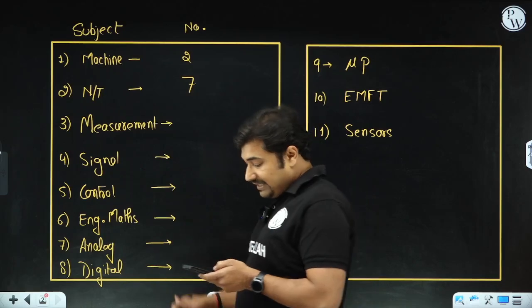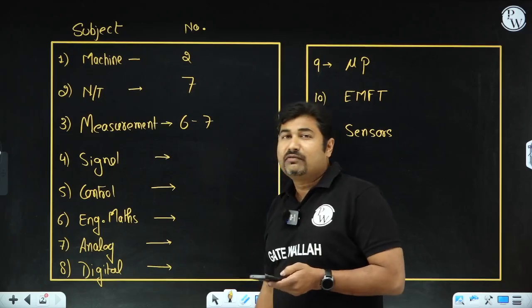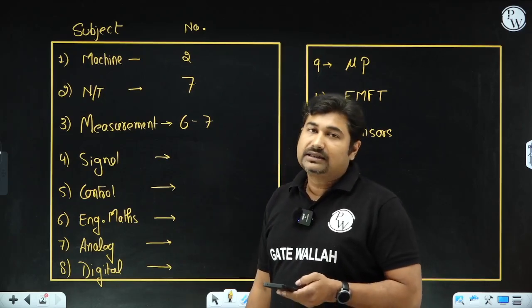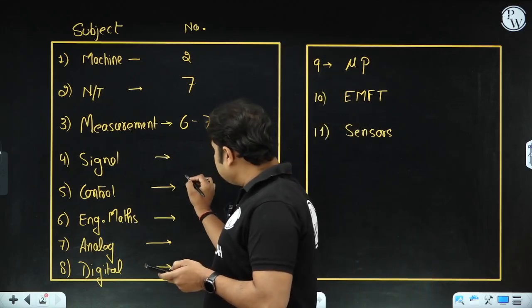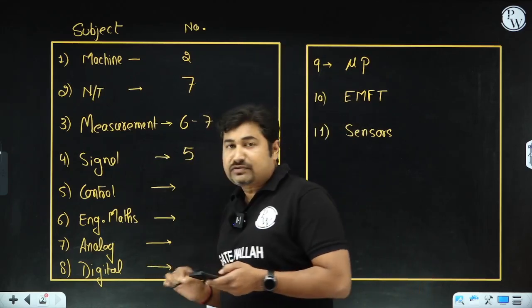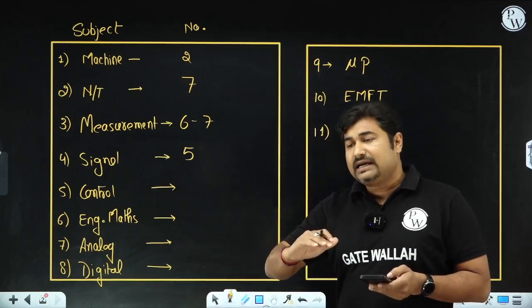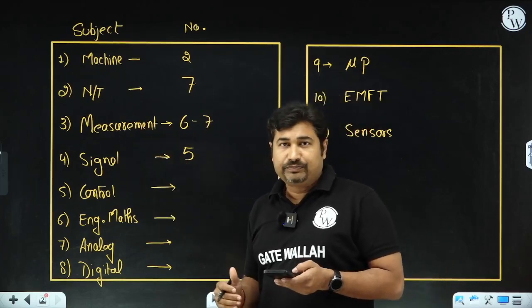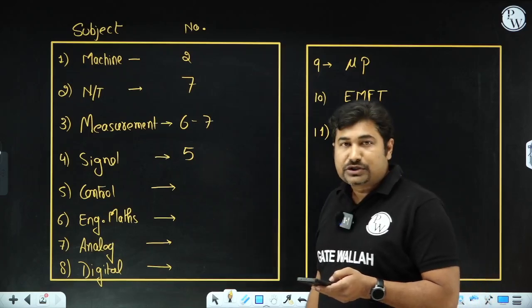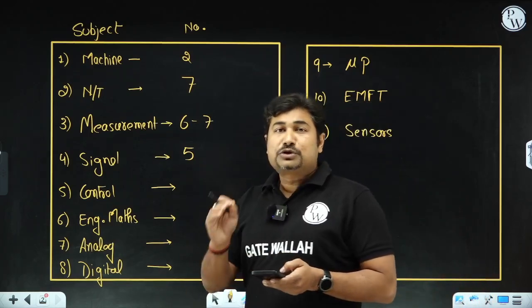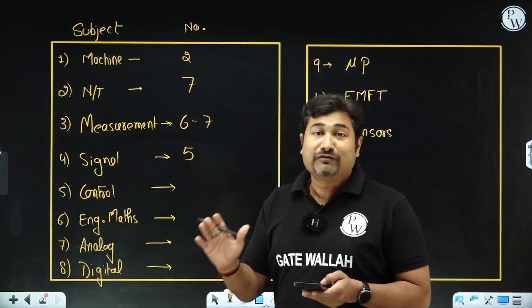Now measurement has six to seven questions. One measurement question is a little bit lengthy, other questions are moderate type and can be easily solved. For signal and systems, there are five questions asked. I found that the signal and system questions are a little bit aligned towards the mathematics side. So if your maths is good, it will be easy for you. Most of the students already commented that they have attended signal system completely, all five questions.